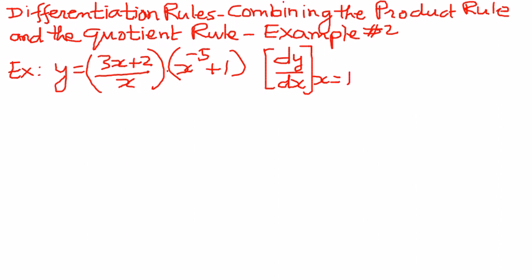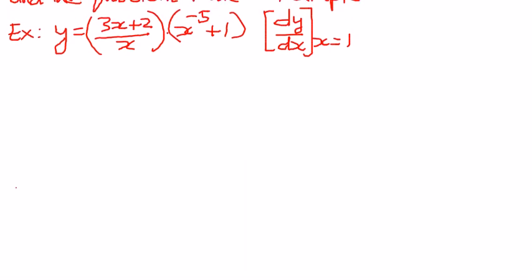So therefore, the way to solve this problem is as follows. Step 1: we are going to use the quotient rule like we did before, and then we are going to use the product rule inside of the quotient rule. So the way we write it out is as follows.